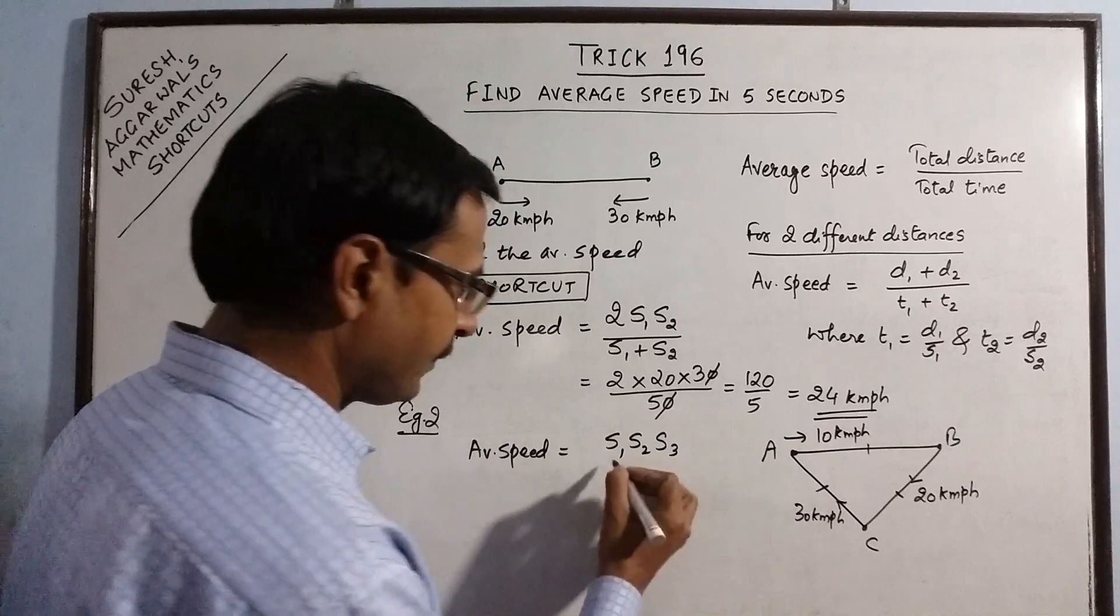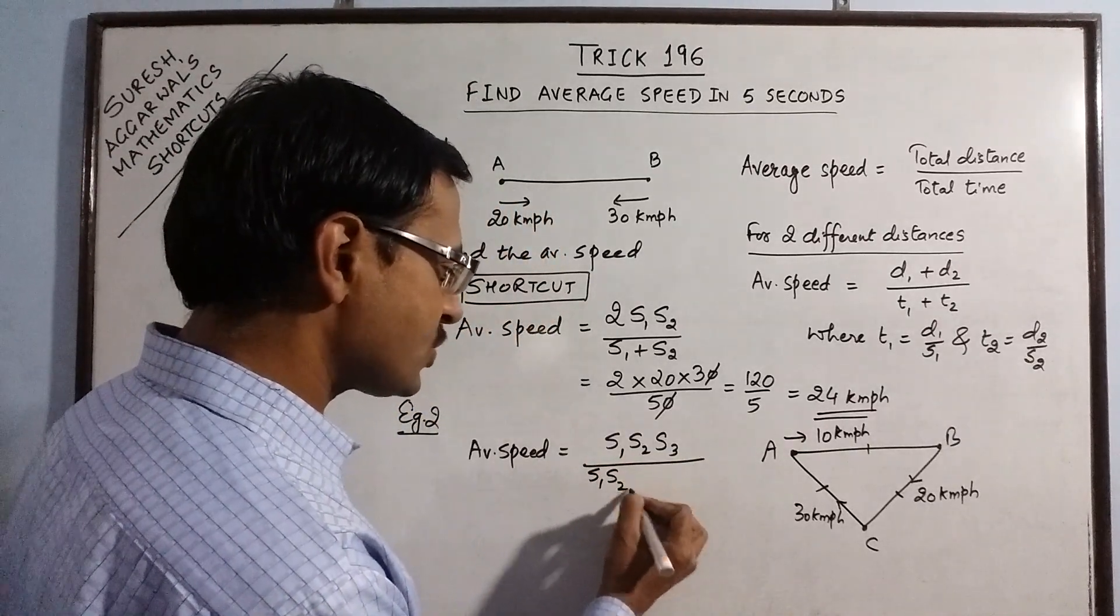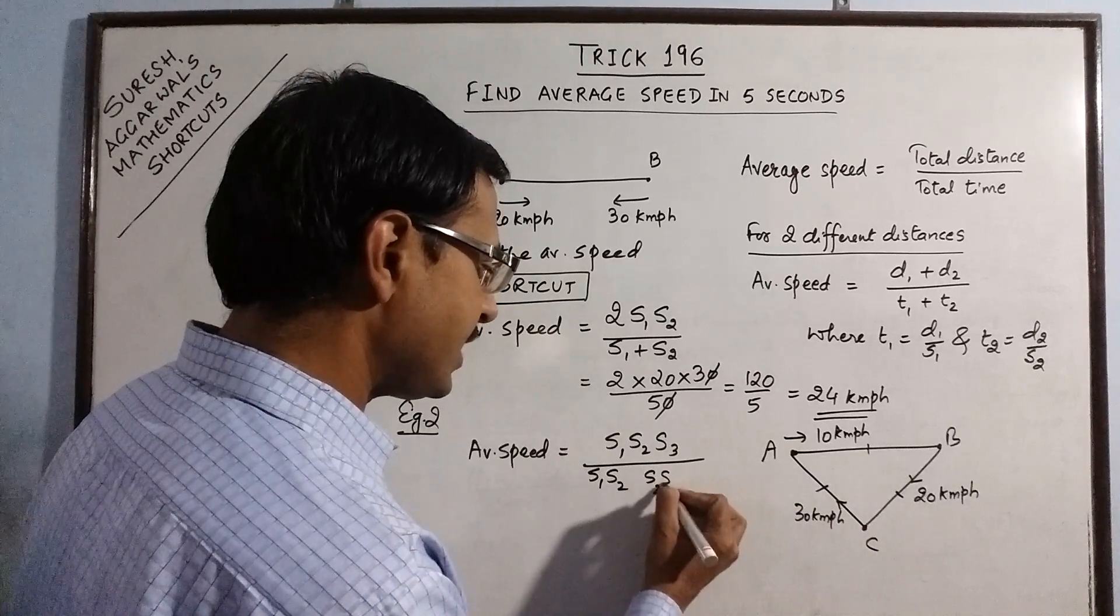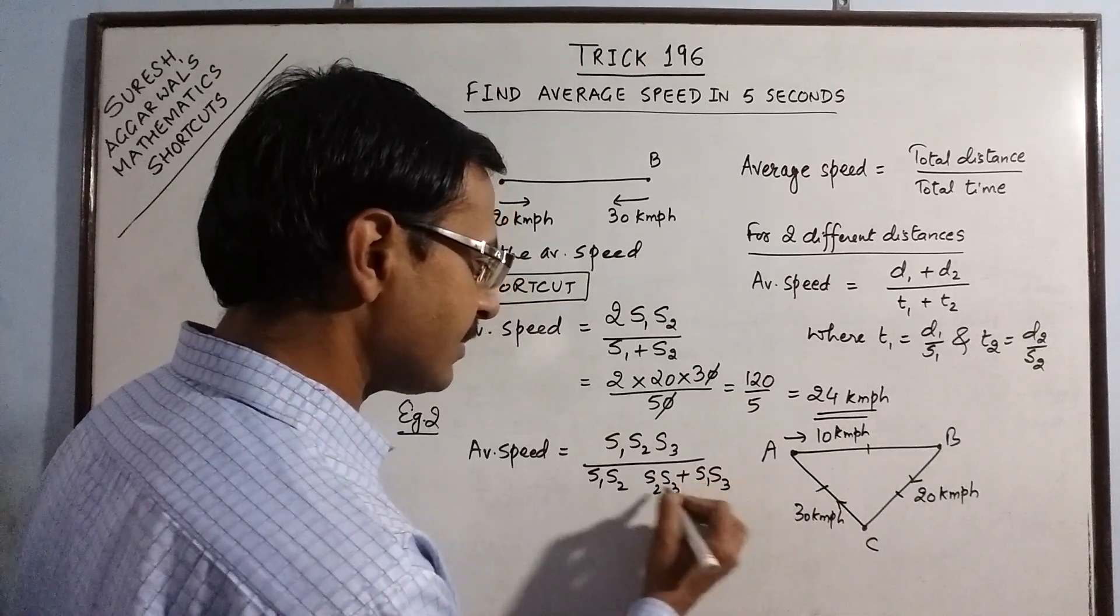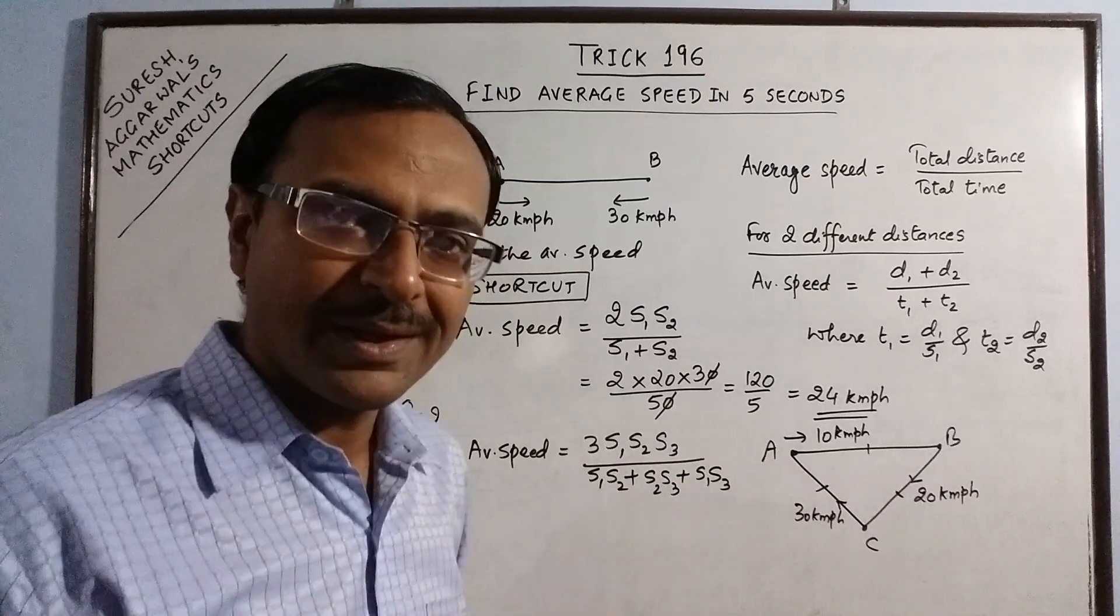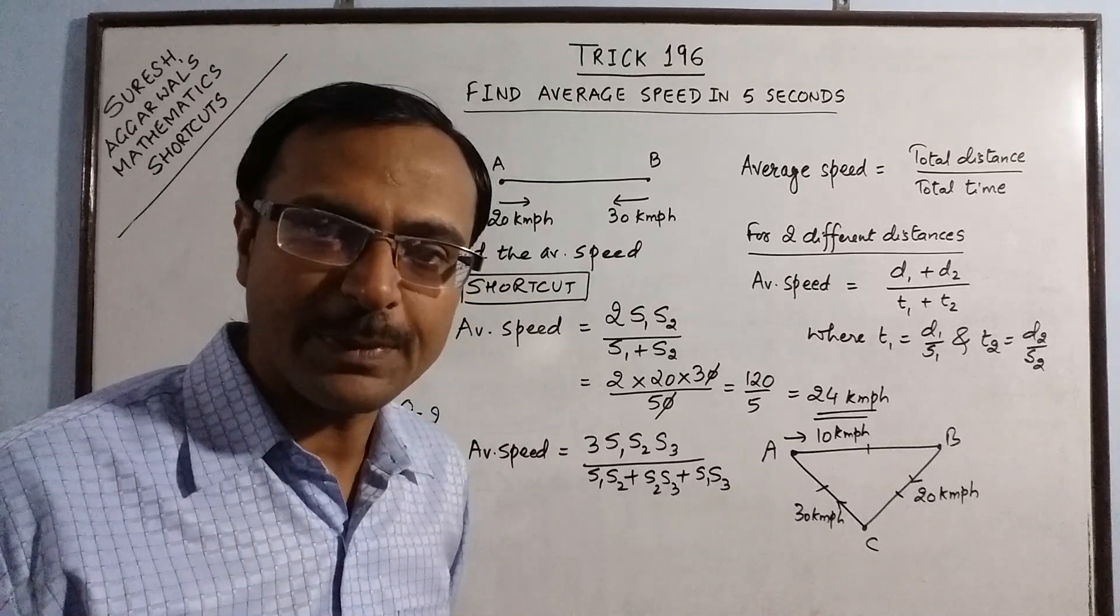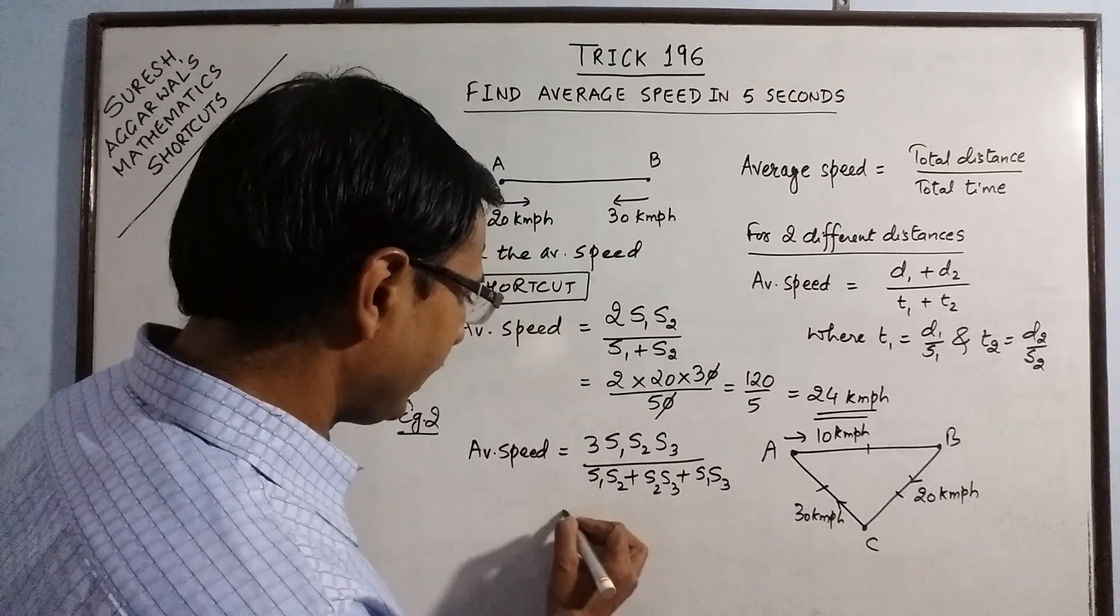S1, S2, S2 and S3 divided by the product of S1, S2, S2, S3 and S1, S3 and take the sum and triple the result. If you apply this formula, you will get the value of average speed directly.